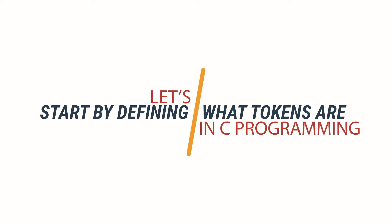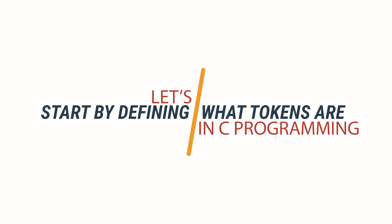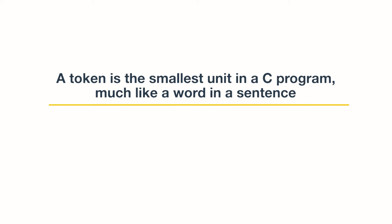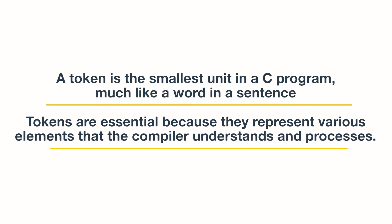Let's start by defining what tokens are. In C Programming, a token is the smallest unit in a C Program, much like a word in a sentence. Tokens are essential because they represent various elements that the compiler understands and processes.